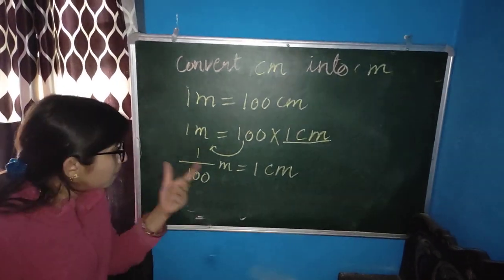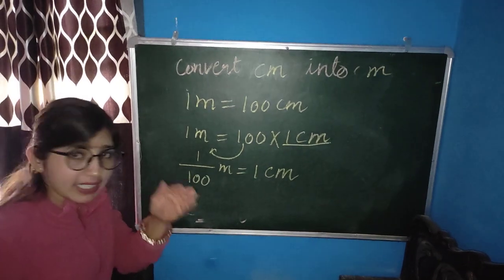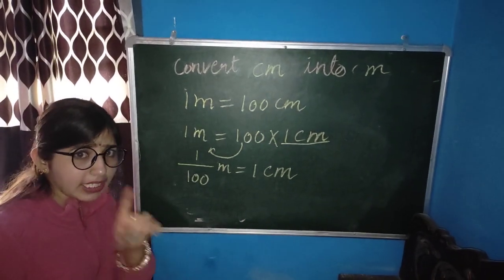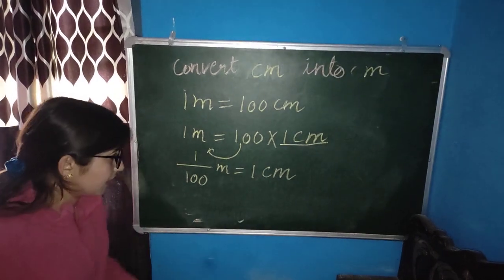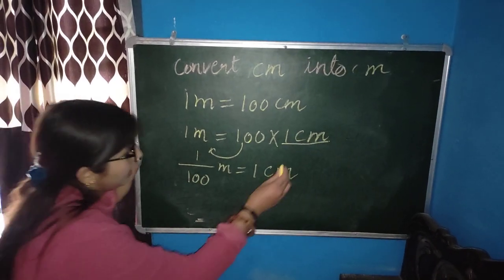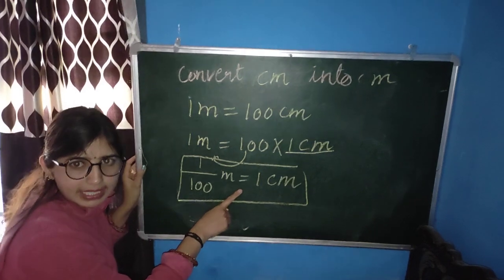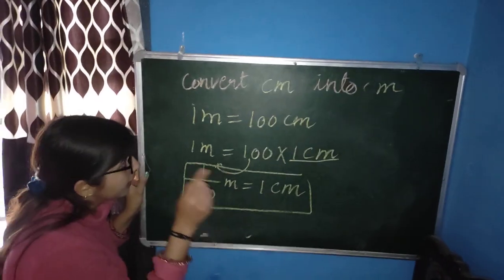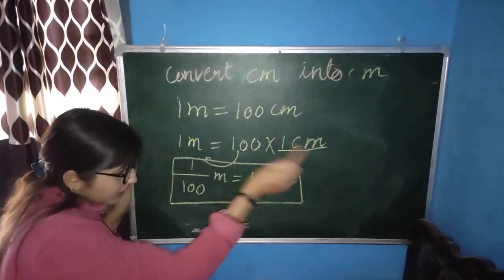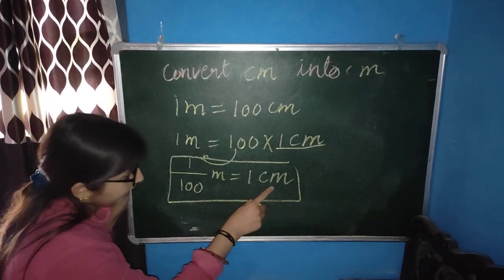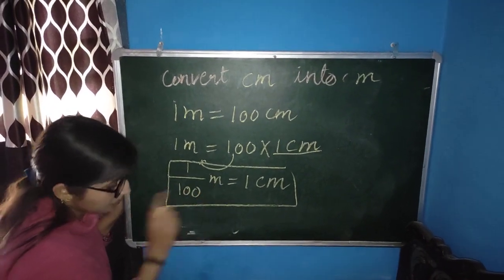If we take the meter rope and divide it into 100 parts, each part would be 1 cm. So the value of 1 cm is 1 by 100 meter. When we convert cm to meter, we use the formula: 1 cm is equal to 1 by 100 meter.